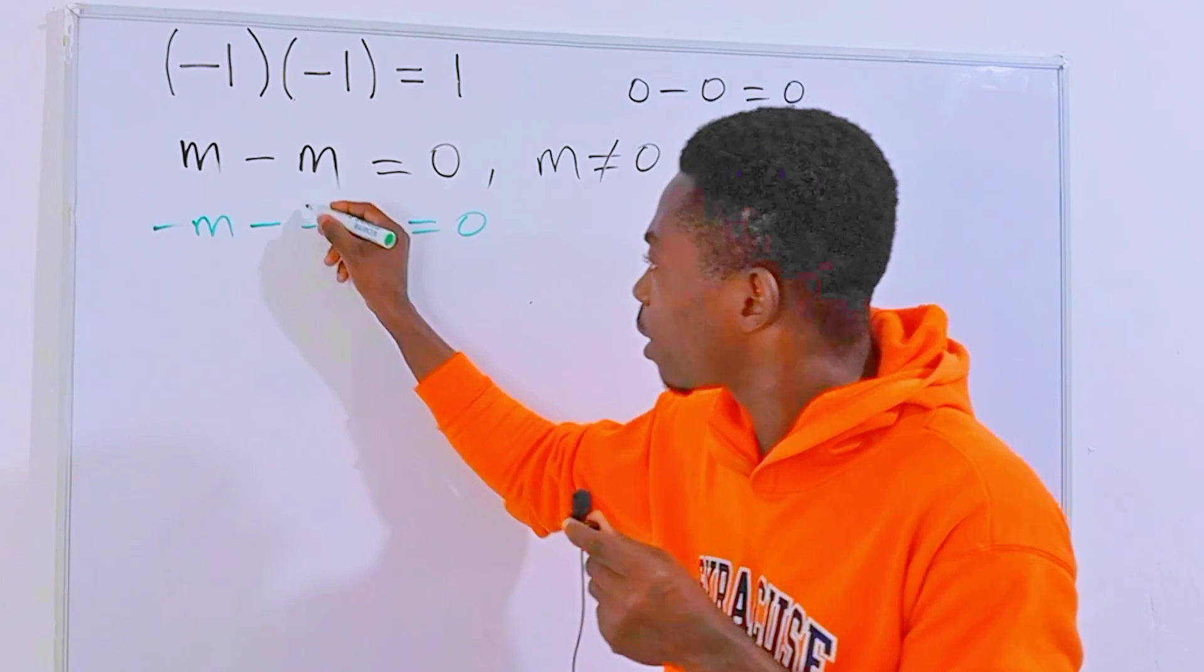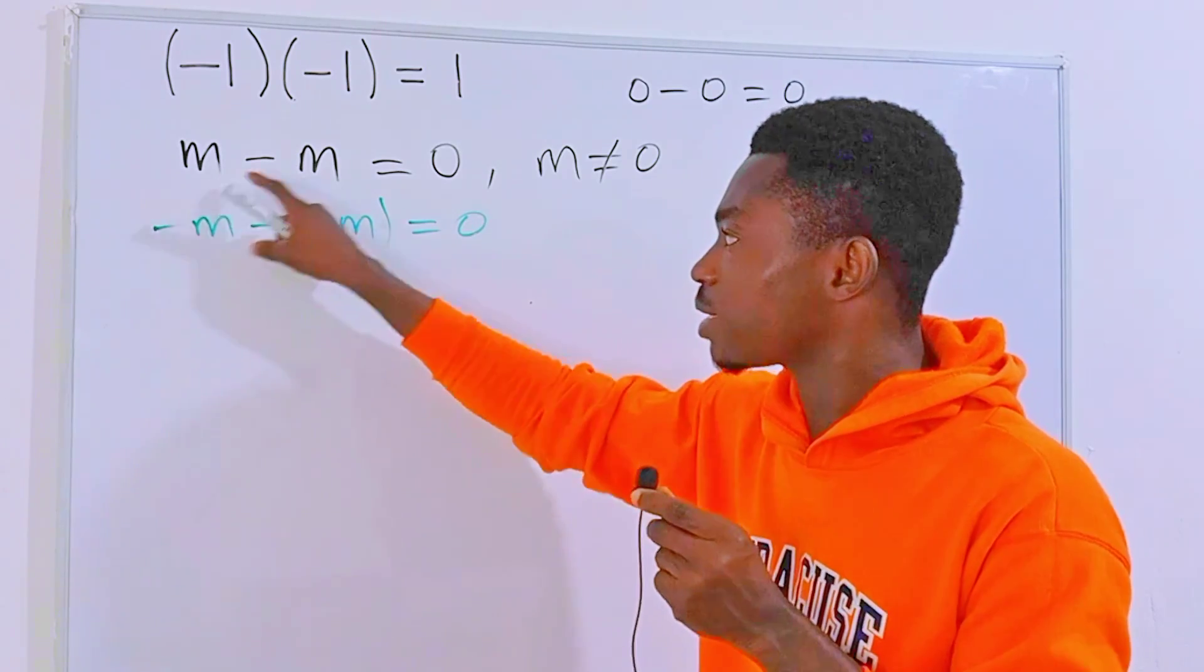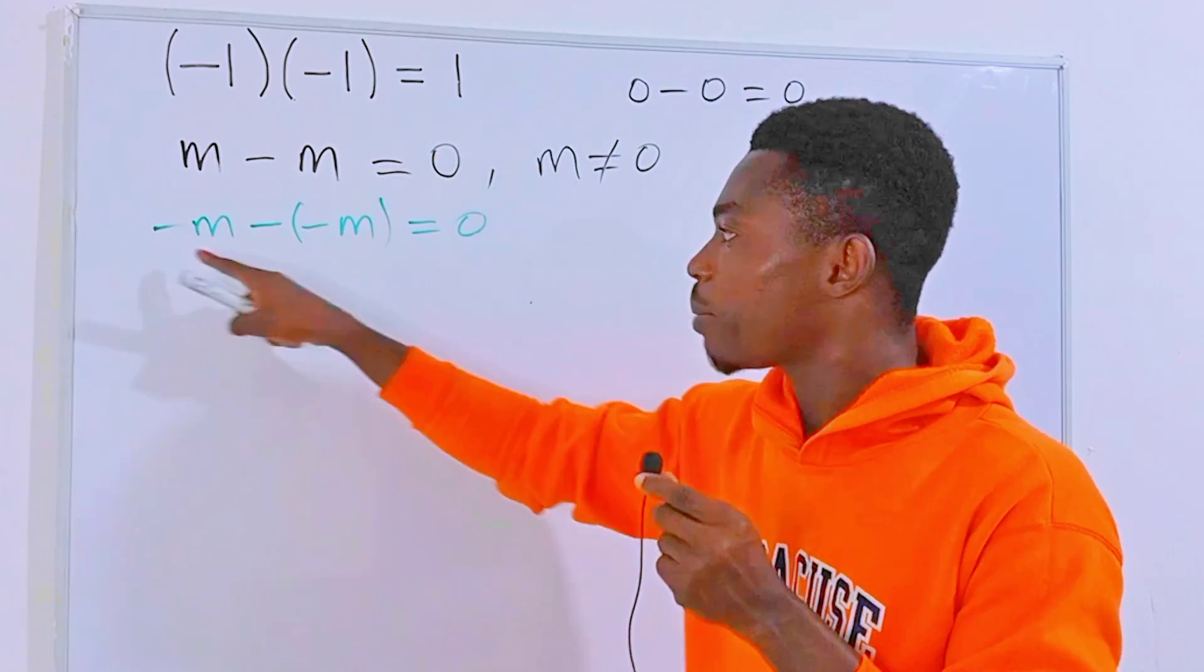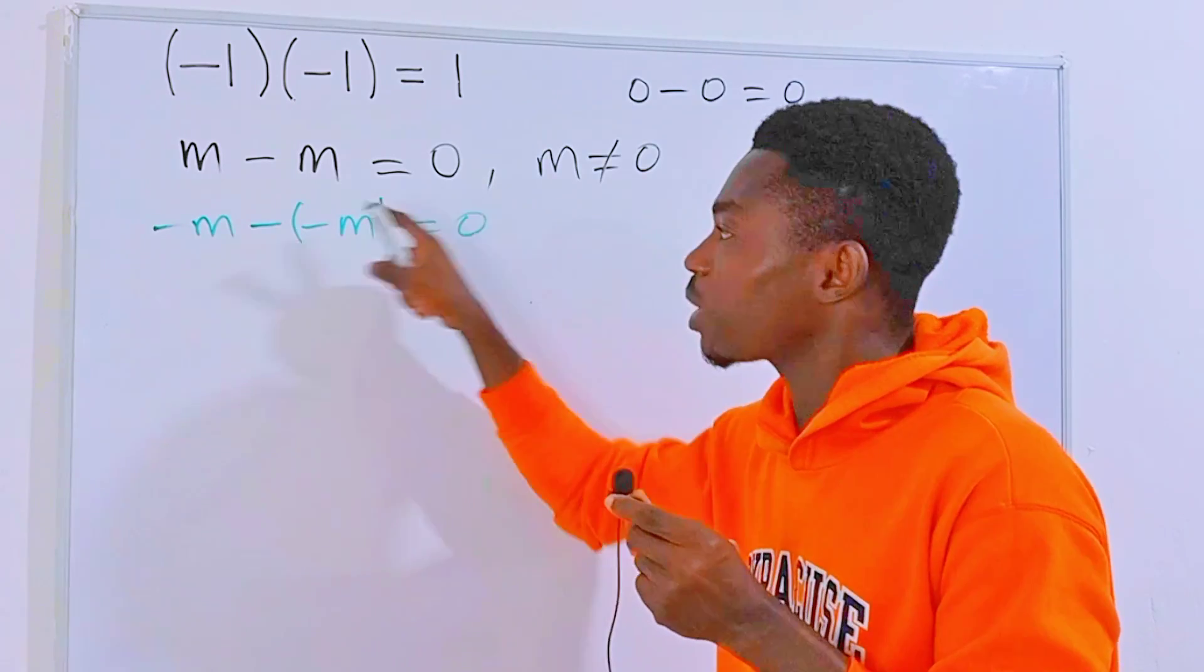Now two different things are equal to the same thing. m minus m is equal to zero, minus m minus minus m is also zero. What it means is that this is equal to this.